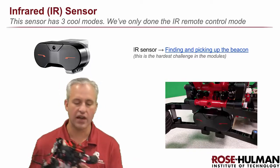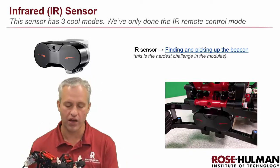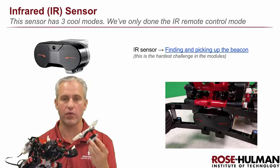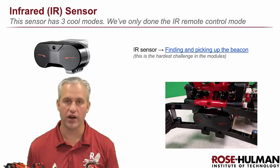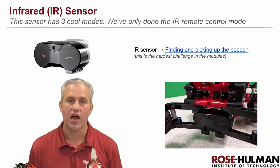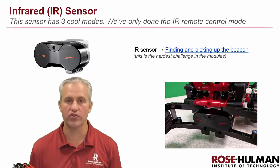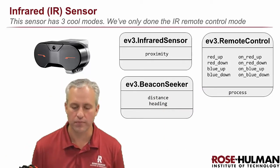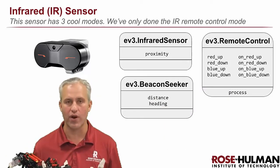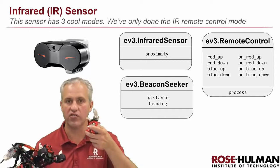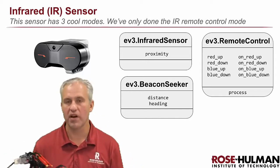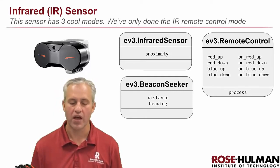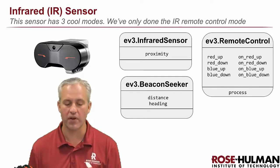Welcome back. We're going to talk about the IR sensor. The IR sensor has been used in remote control mode, and we know how to do that — we create a remote control object. But it's got two more modes we want to talk about this time that are analog modes. The remote control was digital, like pressing buttons, and it's actually the hardest one to use. So we only want to learn about these other modes.